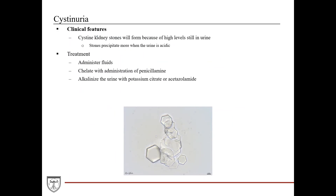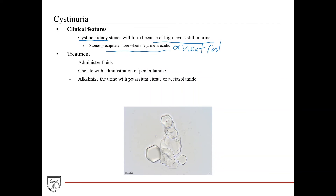Clinically, these patients are prone to developing cystine kidney stones, which form because of the high levels in the urine since they're not being reabsorbed in the proximal convoluted tubule. Patients develop typical kidney stone symptoms: nausea, vomiting, dull ache or colicky pain, and hematuria. These stones can also cause hydronephrosis or pyelonephritis. Cystine kidney stones precipitate more when the urine is acidic or even neutral.